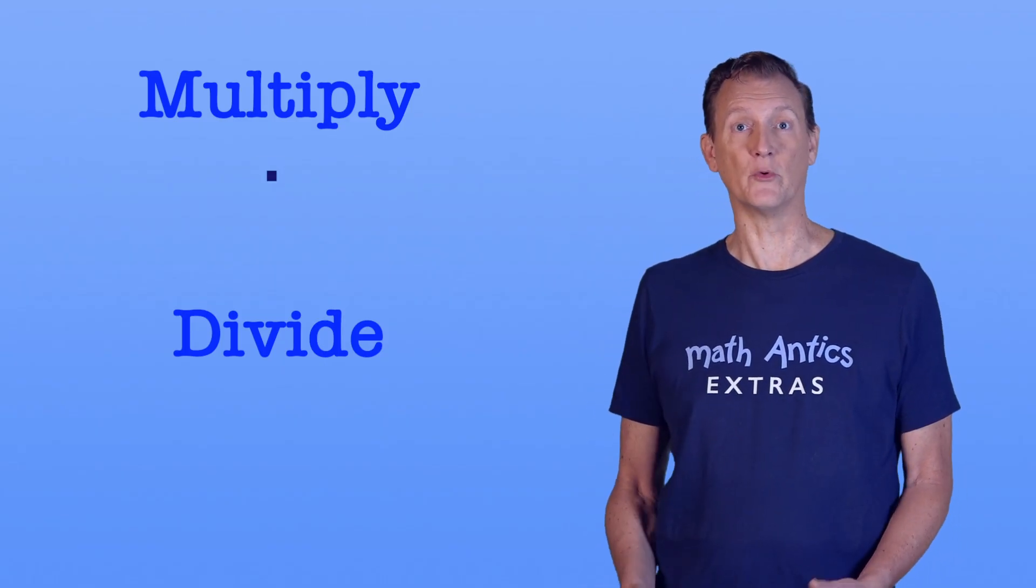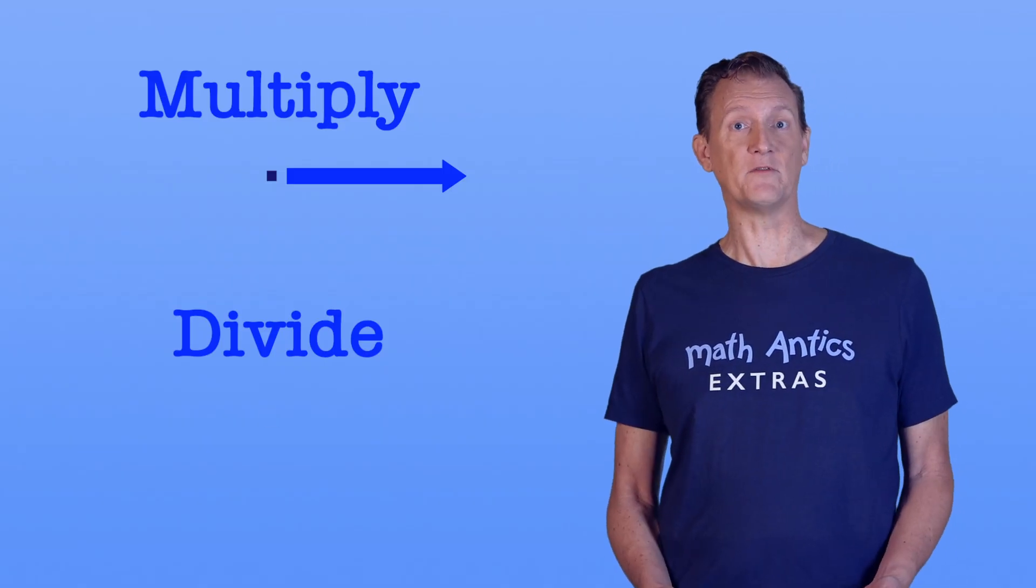Instead of shifting the decimal point to the right, like we did when we multiply, we simply shift it to the left to divide.